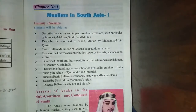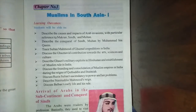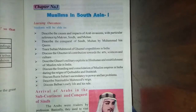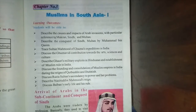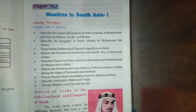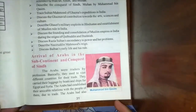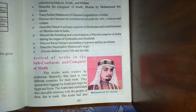Assalamu Alaikum students. Today we are going to start our third chapter of Class 6 History. Our chapter title is 'Muslims in South Asia.' Last time we mentioned Chandragupta Maurya, Buddhism, Jainism, and Ashoka. Now we will see how Muslims came to South Asia, starting with Muhammad bin Qasim. Our first heading is: Arrival of Arabs in the Subcontinent and Conquest of Sindh.